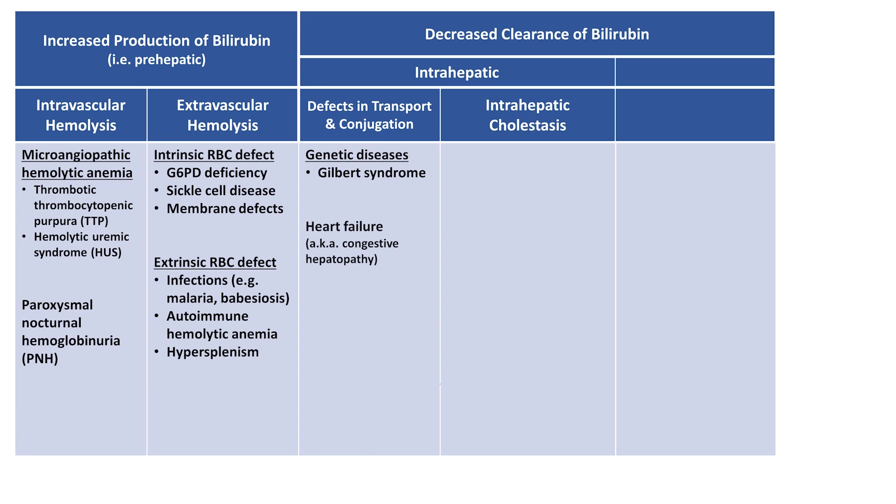In addition to Gilbert, a complication of heart failure called congestive hepatopathy can result in the elevation of bilirubin, predominantly unconjugated bilirubin, in which the magnitude of elevation corresponds more to right atrial pressure than the cardiac output.